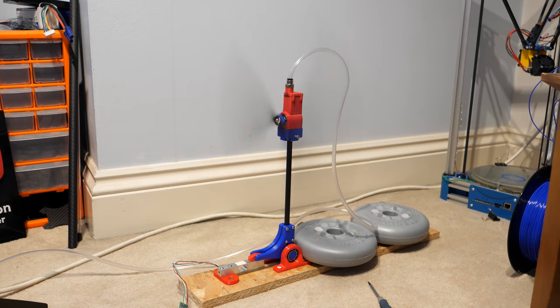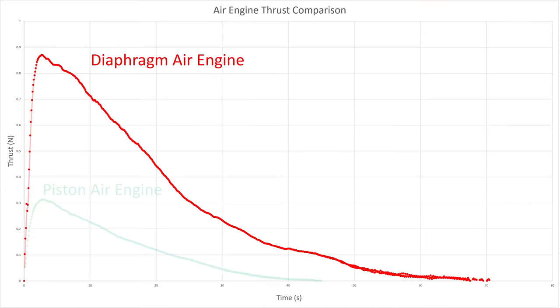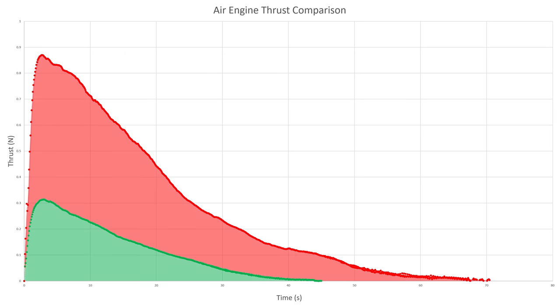This test was done with the same propeller and pressurised bottle, which revealed some surprising results. That's right, my previous best performing air engine produced nearly a third of the thrust of this new one, and if we measure the area under each graph, we get the engine's impulse.